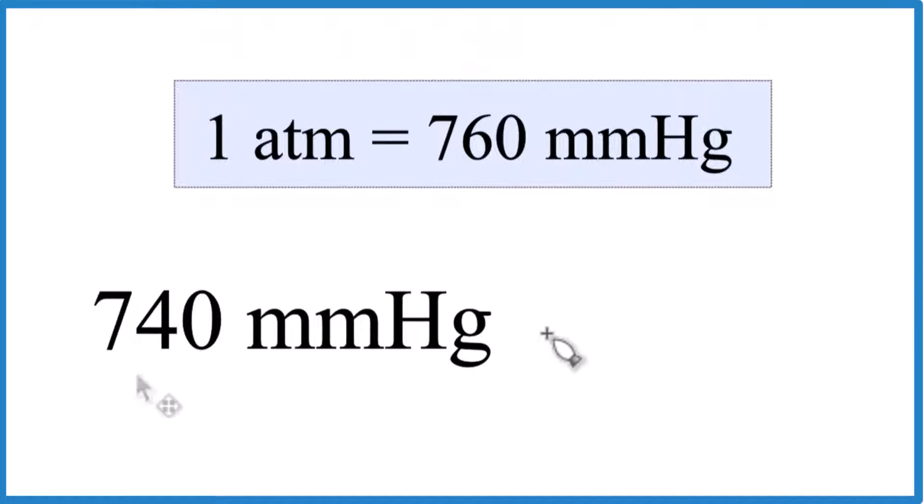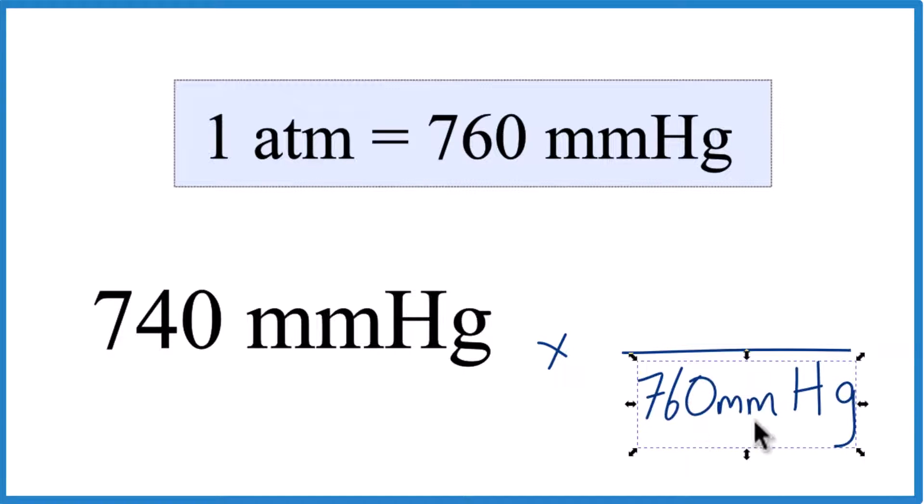We multiply our 740 millimeters of mercury by a conversion factor. Because we want to get rid of millimeters of mercury, we put that on the bottom. One atmosphere is 760 millimeters of mercury.